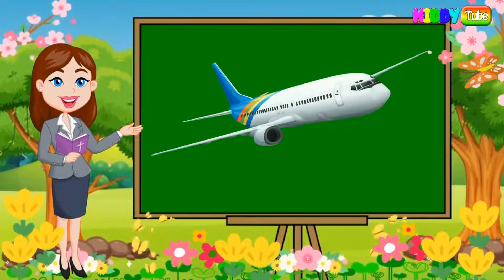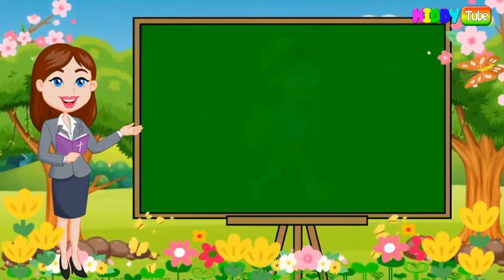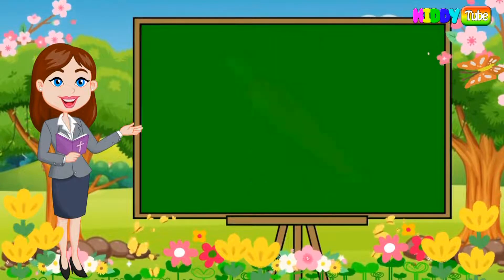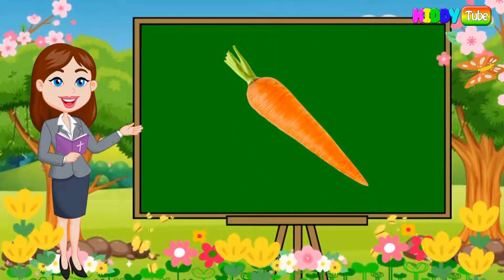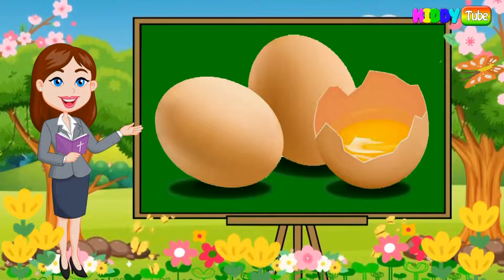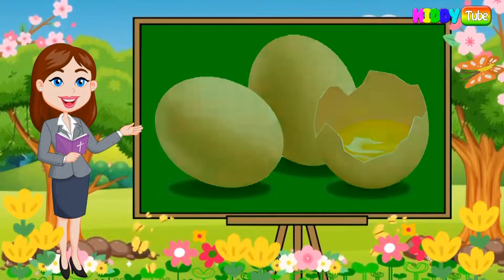A is for aeroplane. B is for boy. C is for carrot. D is for duck. E is for egg.